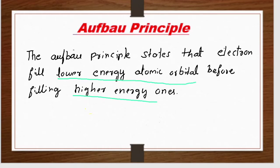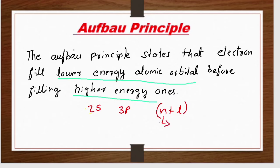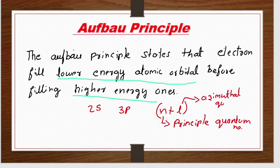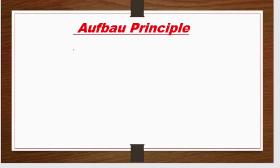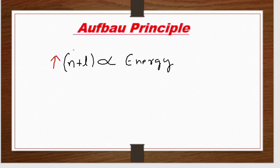This is why we have a rule called the N plus L rule. Here N is the principal quantum number and L is the azimuthal quantum number. The N plus L rule determines the energy of an orbital — N plus L value is directly proportional to energy. The higher the N plus L value, the higher the energy of that orbital.